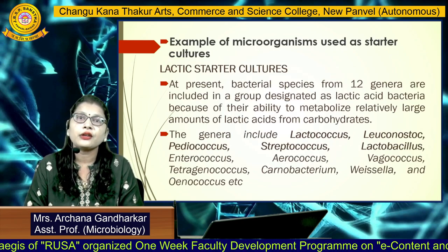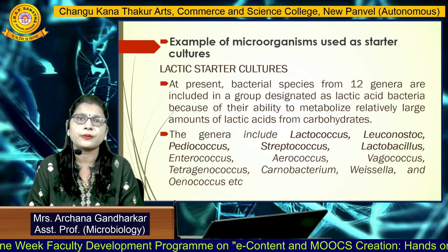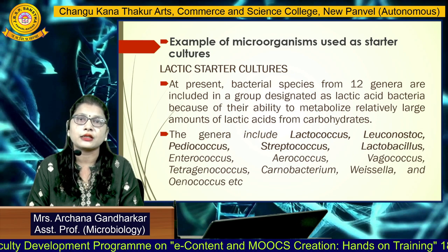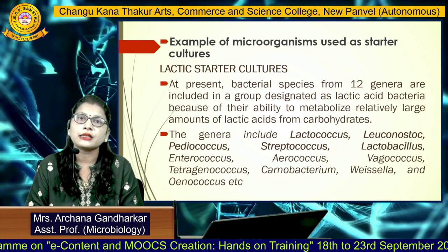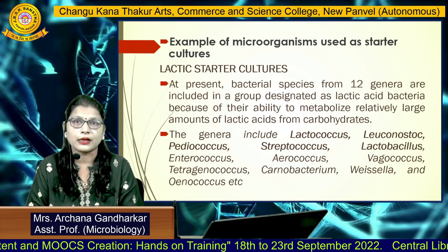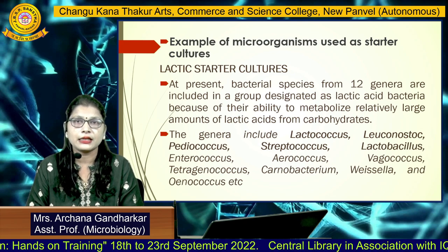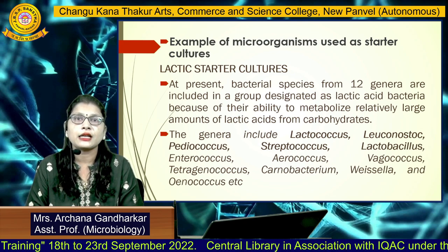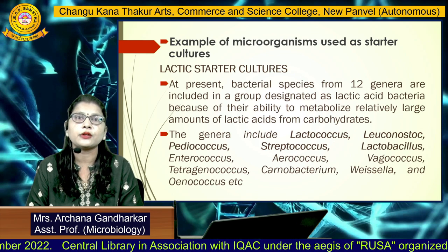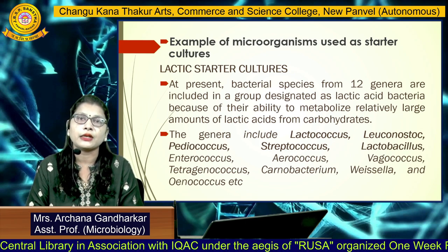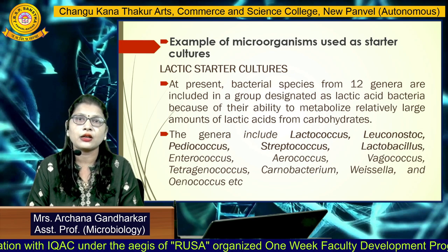Now, the types of microorganisms used as starter cultures. The first example is lactic starter cultures. There are 12 genera included in the group called lactic acid bacteria. There are two classes: homofermentive and heterofermentive. Lactic starter cultures produce lactic acid by fermentation of carbohydrates. Homolactic fermenters produce only lactic acid, while heterofermentive organisms produce lactic acid along with acetic acid, ethanol, and carbon dioxide.